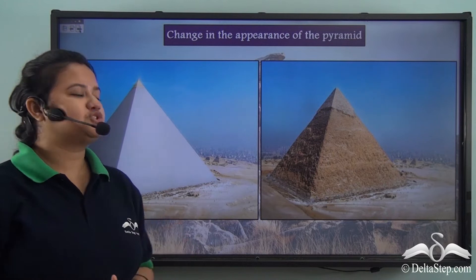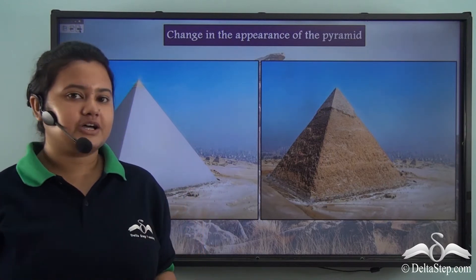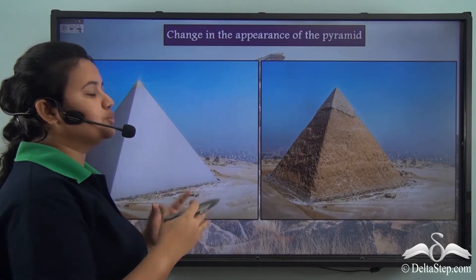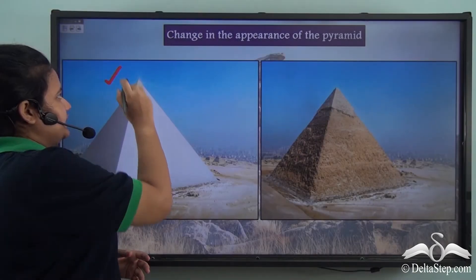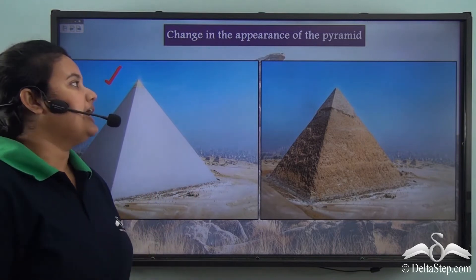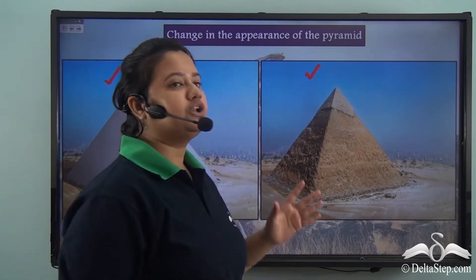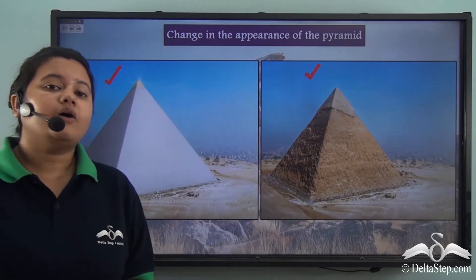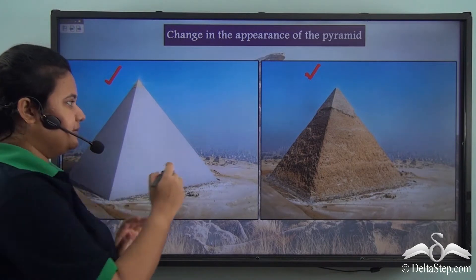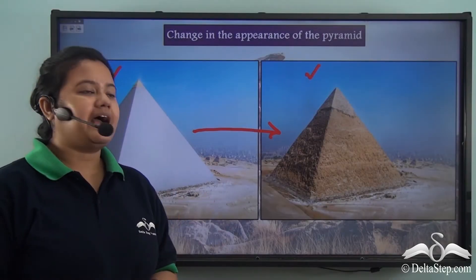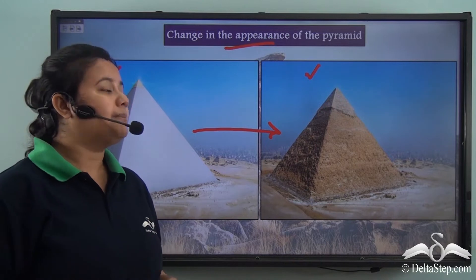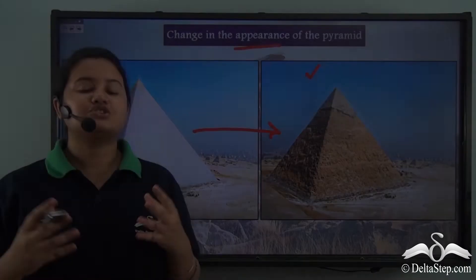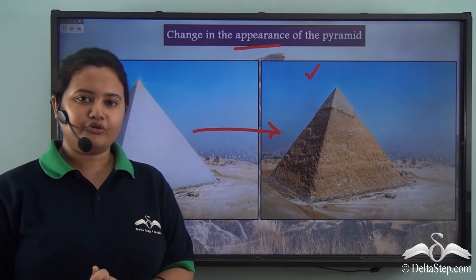Look at the pictures of these two pyramids. You will be surprised to know that these two pictures are of the same pyramid. The first one is the picture of the pyramid in ancient time and this one is the present look of the pyramid. The pyramid has experienced a change in appearance because it has been weathered by natural factors over these years. So now let's learn about this type of weathering.